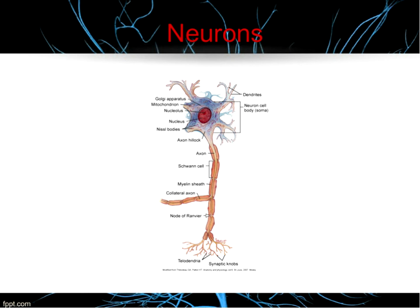The dendrites — those short processes that look like little octopus tendrils at the top — extend from the cell body. They receive impulses from the axons of other neurons and conduct those impulses toward the cell body. Then there's the axon — that long skinny structure. Axons can be varied distances, from just a couple of micrometers up to a full meter in length.